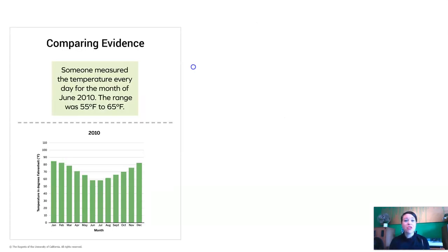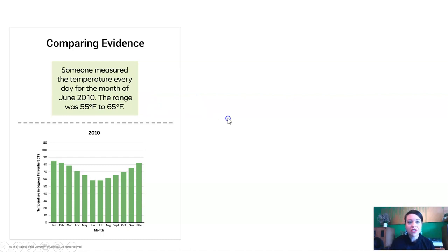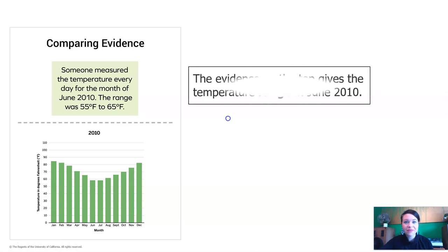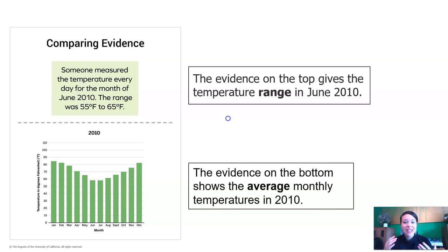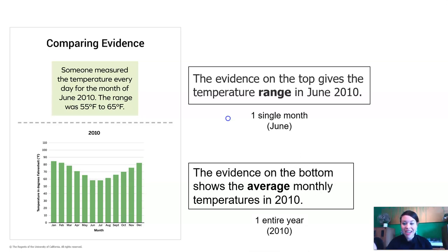Today we're going to compare some new evidence. Take a look at this evidence card. On the top it says: someone measured the temperature every day for the month of June 2010, and the range was 55 to 65 degrees Fahrenheit. The bottom shows the average monthly temperatures for every month in 2010. So the top is one single month — June — and the bottom is one entire year, all of 2010.